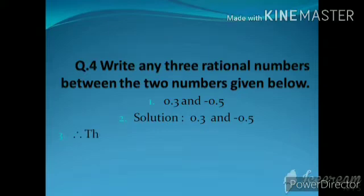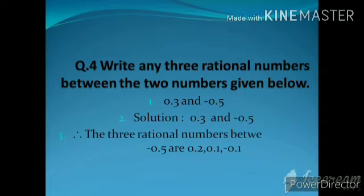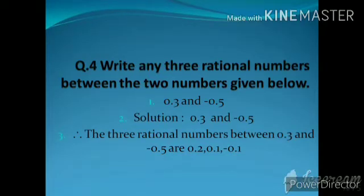Solution: the three rational numbers between 0.3 and −0.5 are 0.2, 0.1, and −0.1. You can write any three rational numbers between 0.3 and −0.5.